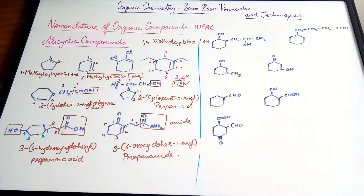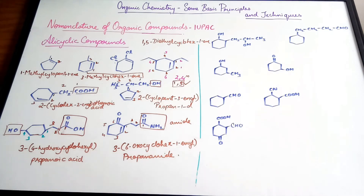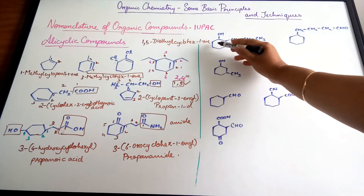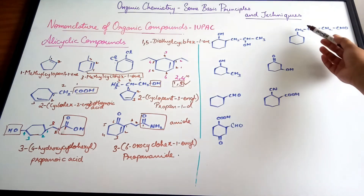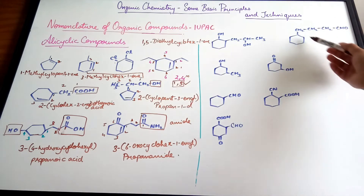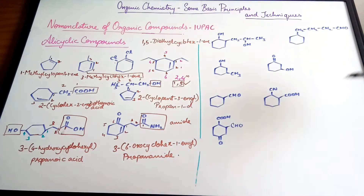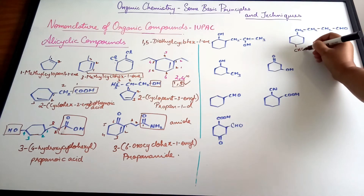If both the ring and the side chain have the same functional group, whichever has more carbon atoms forms the main compound and the other becomes the substituent. Here, with a six-membered ring versus a three-carbon chain, the six-membered ring is the main part.